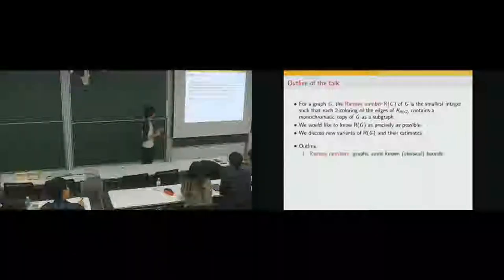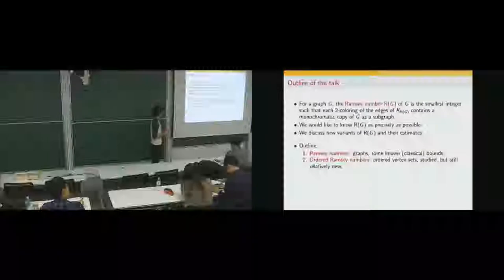There will actually be three parts to this talk. In the first part, I will recall some results about estimates for Ramsey numbers — mostly classical results. Second, I will talk about ordered Ramsey numbers, which is a variant for graphs where the vertex set is linearly ordered and we keep the order fixed. This has been studied recently and is now quite well understood, becoming increasingly popular in recent years.